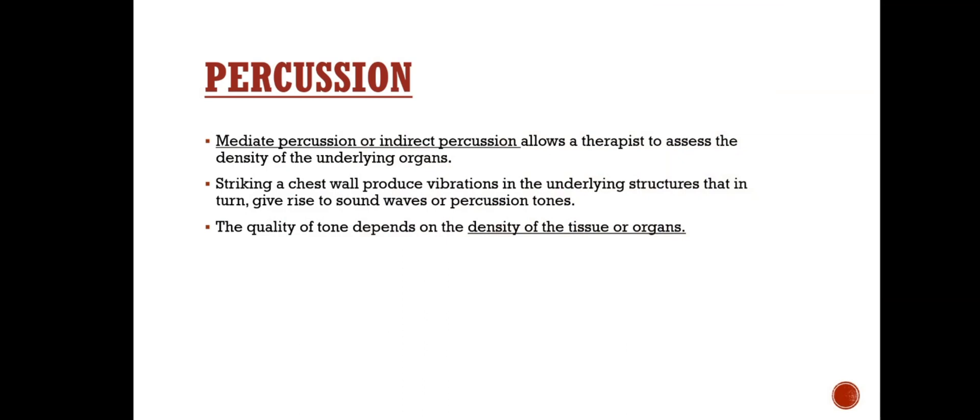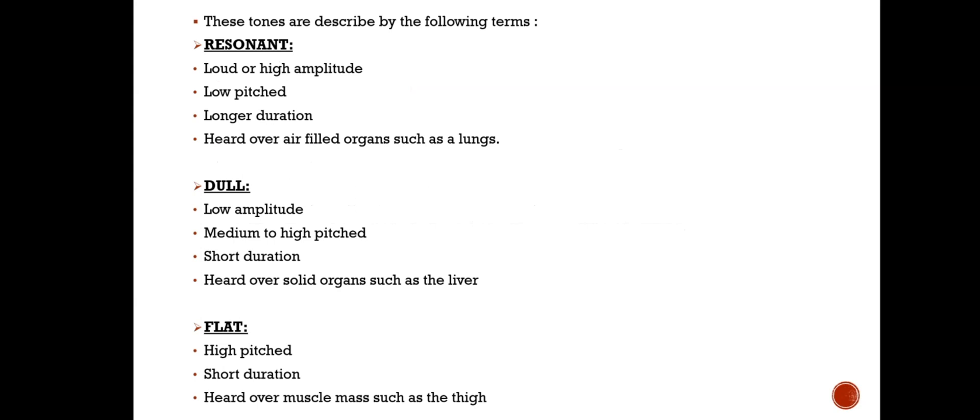Percussion. Mediate or indirect percussion allows a therapist to assess the density of underlying organs. Striking the chest wall produces vibrations in underlying structures that give rise to percussion tones. The quality of tone depends on the density of the tissue or organ. Resonant tone is loud or high amplitude, low-pitched, longer duration, and heard over air-filled organs such as the lungs.